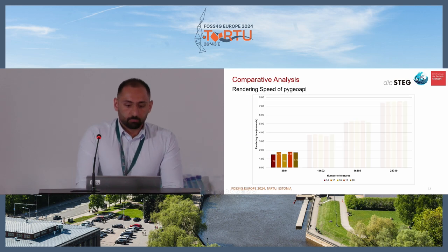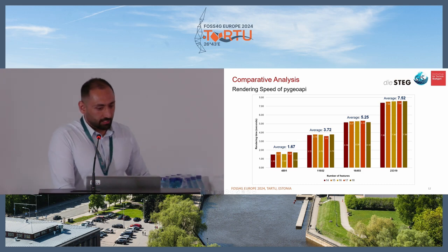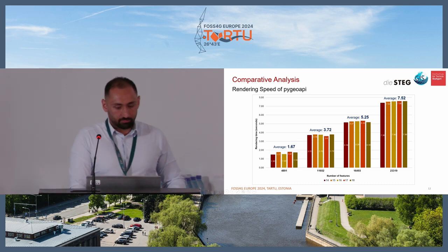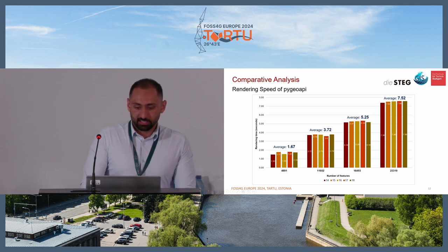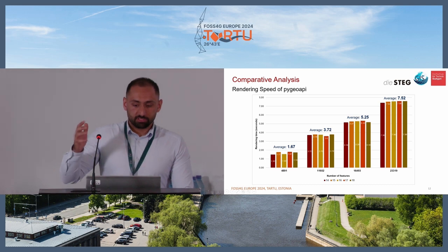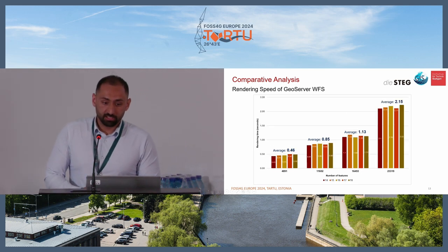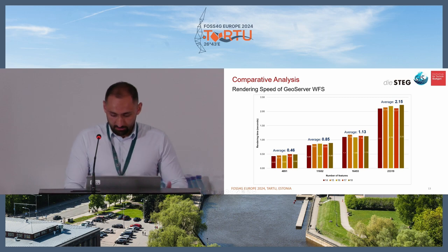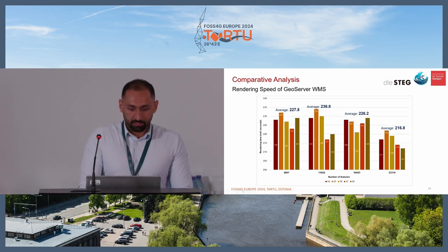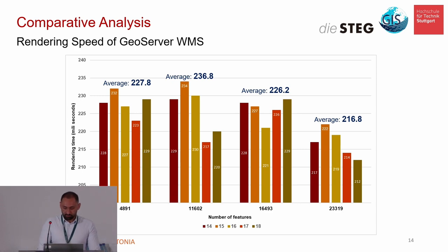Here is the comparative analysis. With 5000 features, the average rendering speed is around two seconds. If we increase it to 25,000 features, the average speed is around eight seconds. Here is the rendering speed of GeoServer WFS — you can see the result. The rendering speed in milliseconds is really fast.